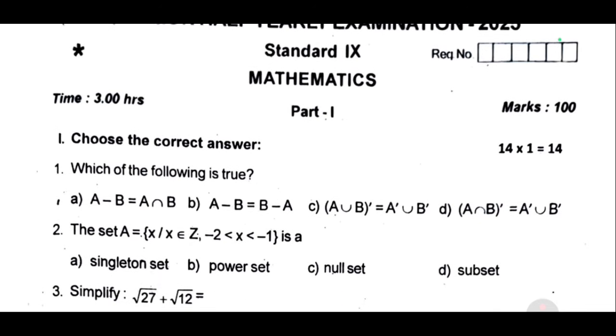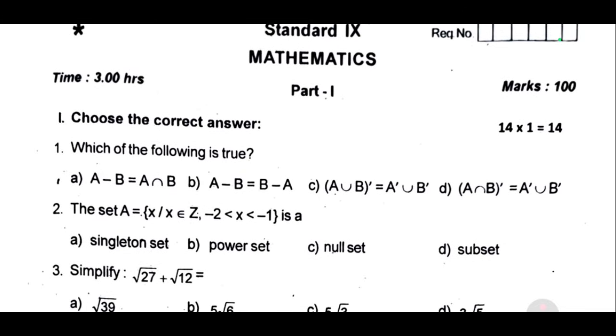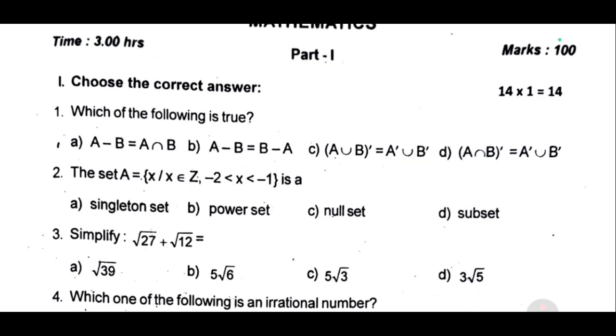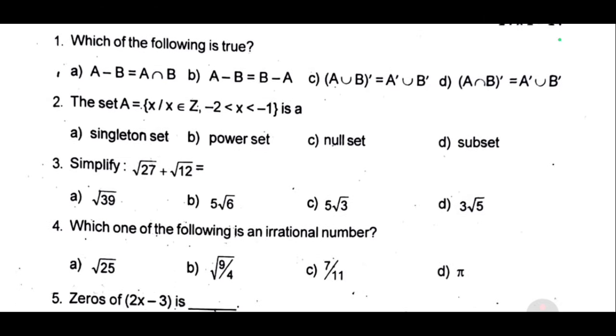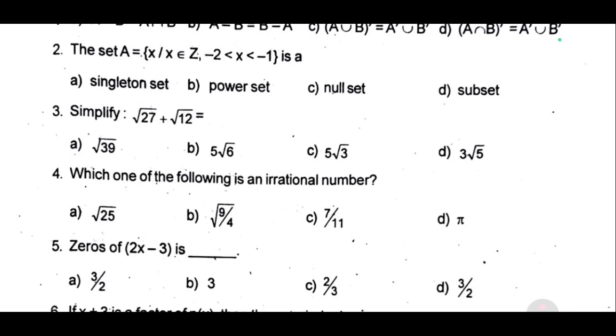Choose a question. Which of the following is true? Second, set A equal to x belongs to integer, minus 2 less than x less than minus 1 is a dash. Third one, simplify. Which one of the following is an irrational number?